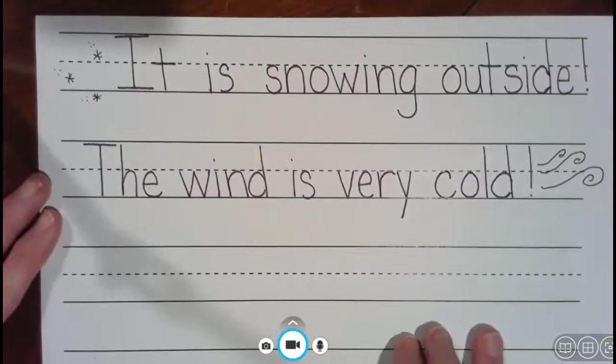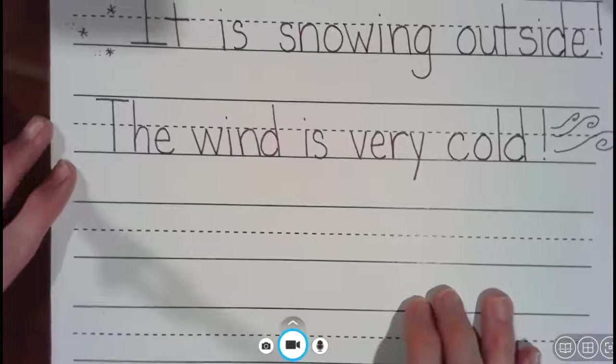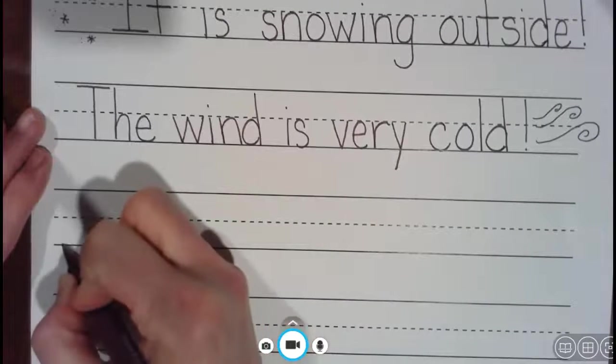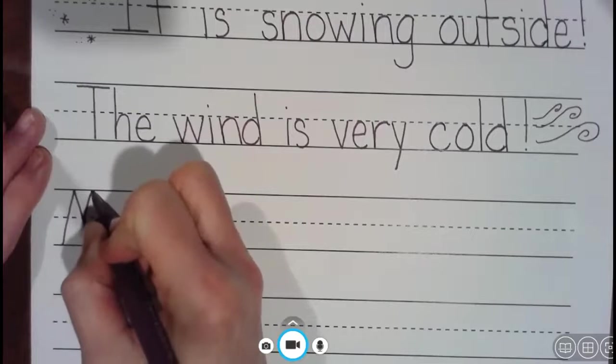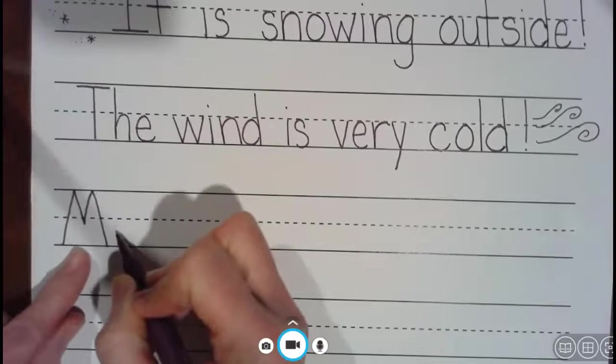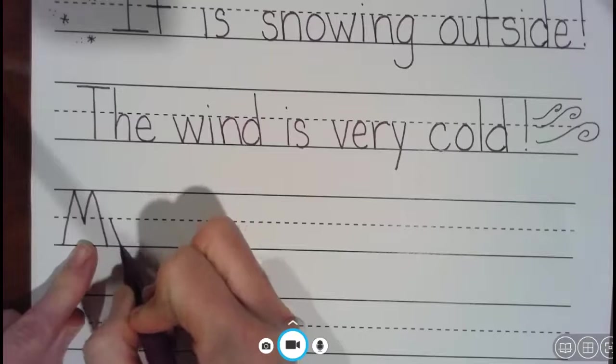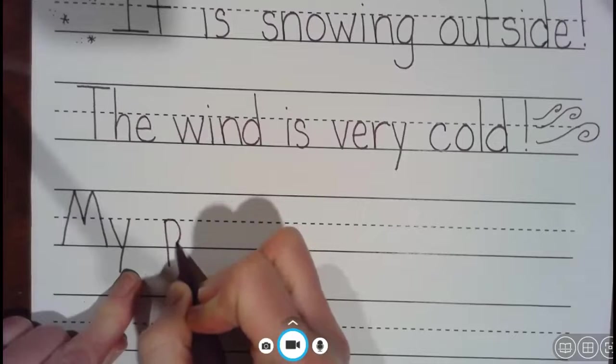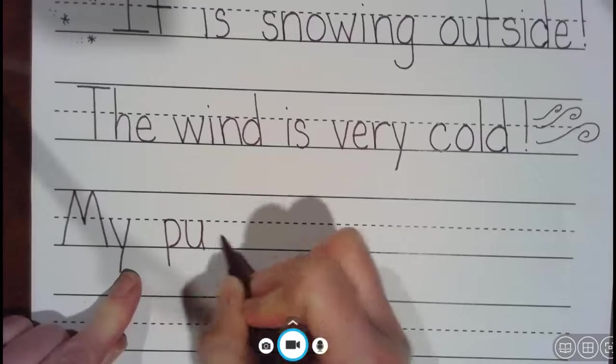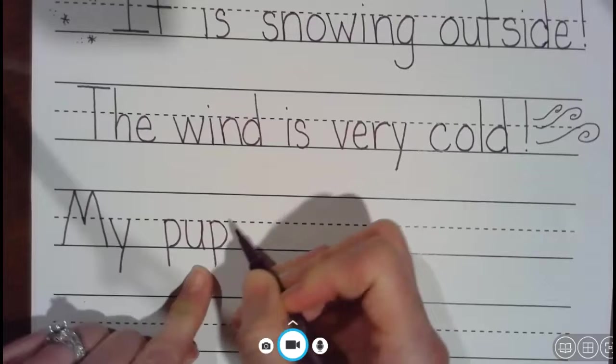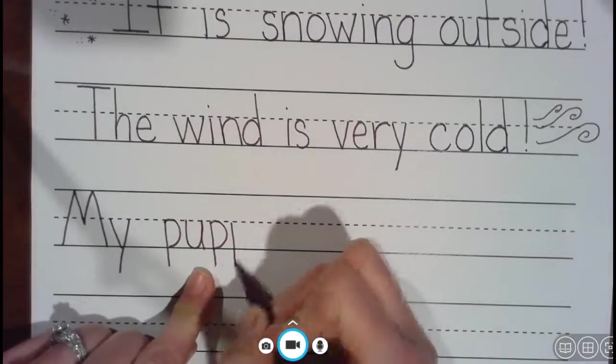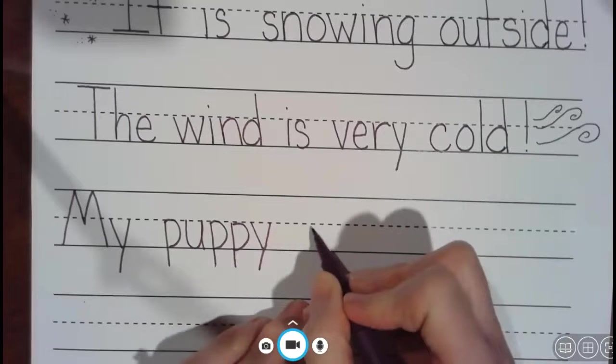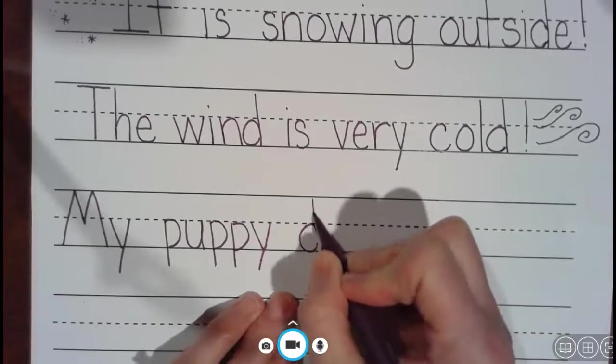The wind is very cold, and I'm gonna say next in my next sentence, my puppy didn't like it. So I have a puppy named Roscoe. He did not like the cold snow on his paws. So I made a capital M because it's the beginning of a sentence. My puppy, puppy, and puppy, that's the word pup, and puppy is another P and a Y.